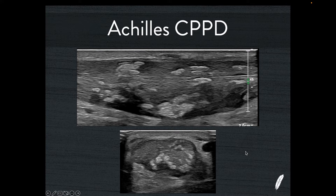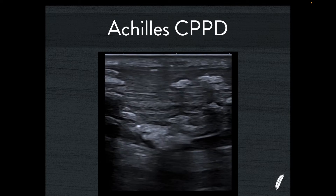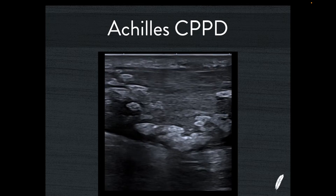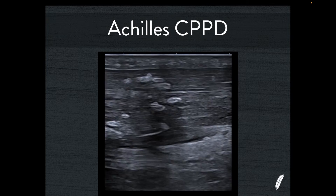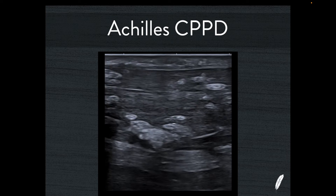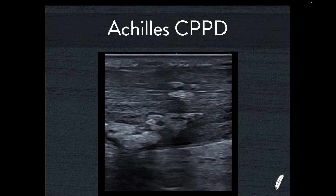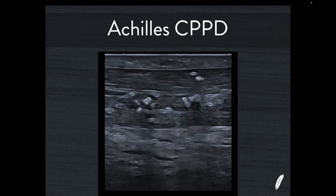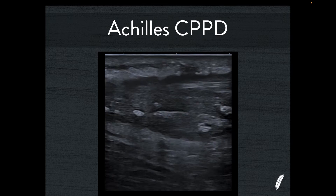So I was puzzled. Taking more videos and images, you can see there are innumerable deposits of crystal deposition inside the Achilles tendon — a very widespread process. If you look at the background texture of the Achilles tendon, it is abnormal. There's no doubt there's an element of disrepair tendinosis overlaid with some type of crystal deposition disorder.